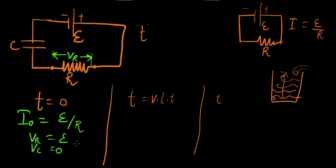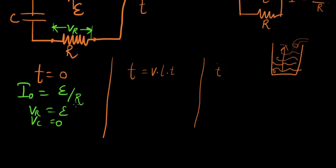And VC equals zero. There's no potential difference across the capacitor if we call it VC.